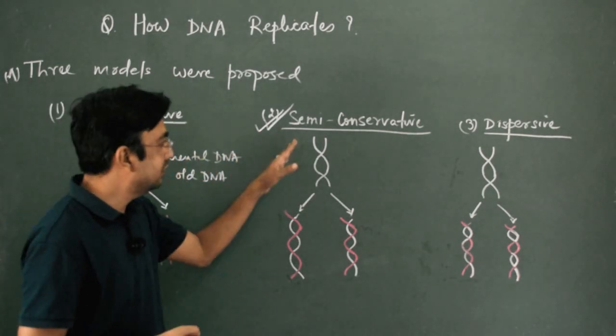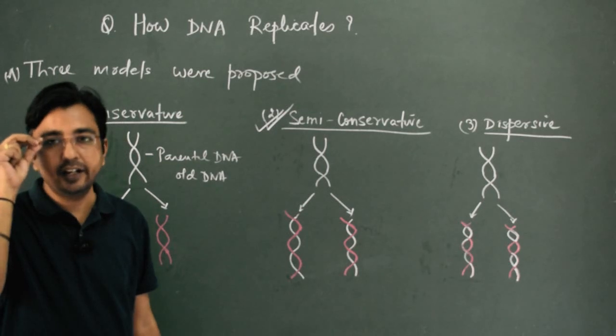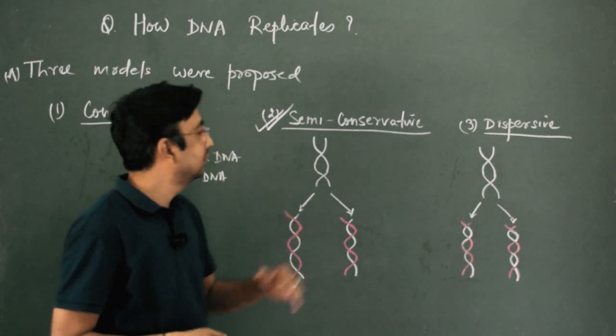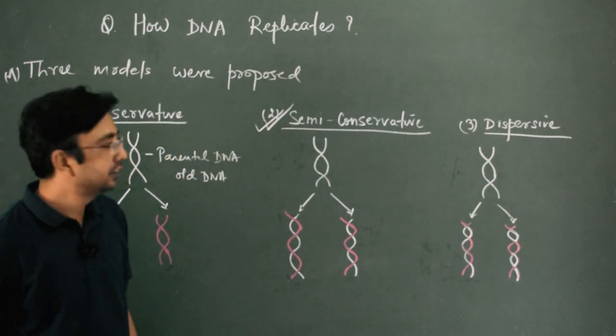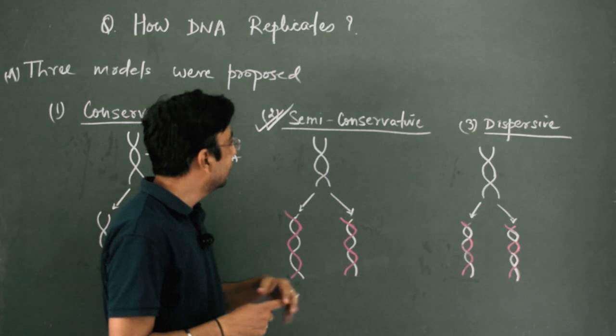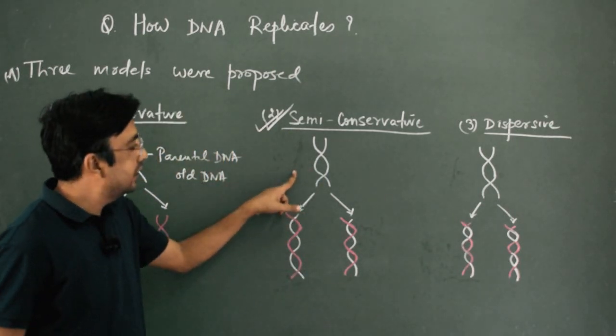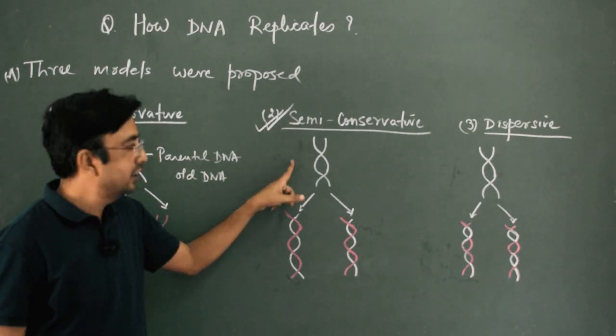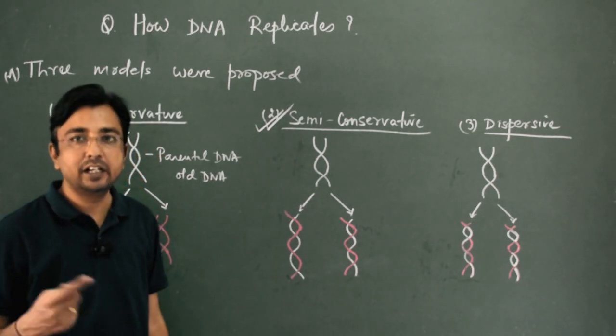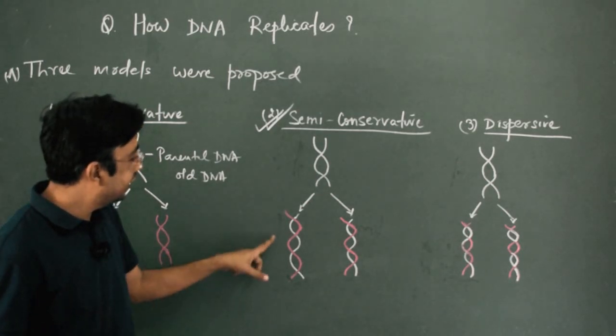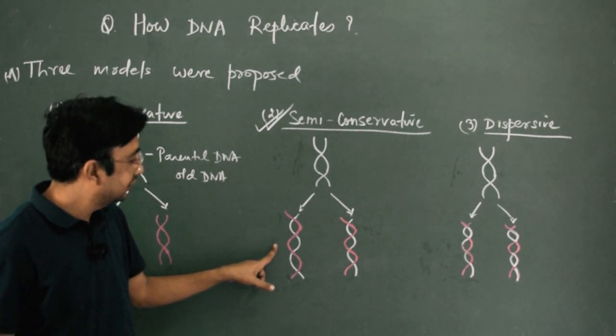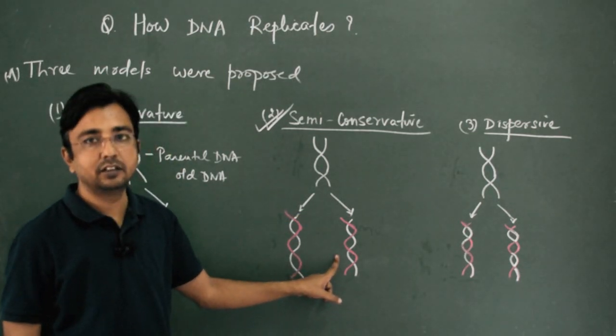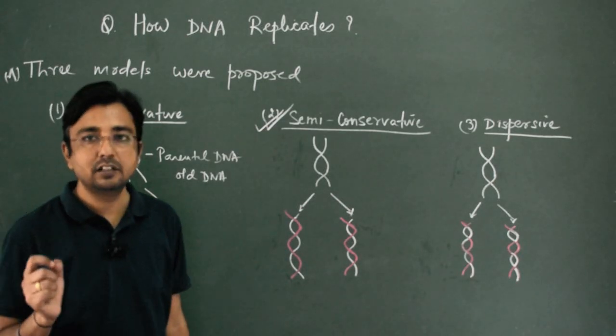Semi-conservative model was suggested by Watson and Crick, but they did not have any experimental proof or scientific proof of this model. They only suggested. According to this model, semi means half. This is the parental DNA. And in the next generation, half of this strand means one strand of the parental DNA is being conserved in the next generation. In the next generation, half of the parental DNA is present here, and half of the parental DNA is present here. That's why it is called semi-conservative model.